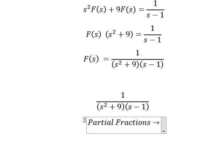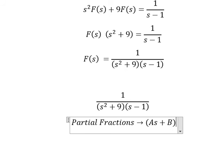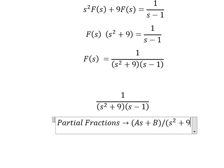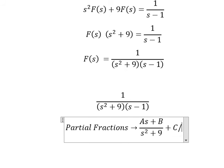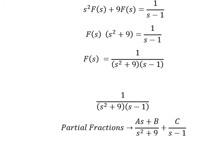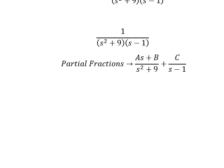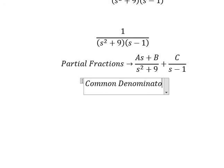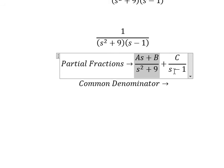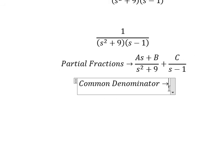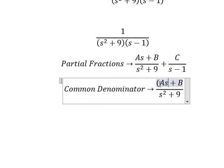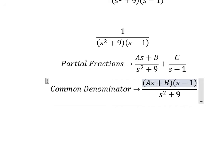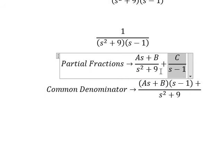So I will put A plus B over S squared plus 9, and C over S minus 1. Next, we do common denominator. About this one, it is missing S minus 1. About this one, it is missing S squared plus 9.